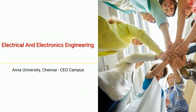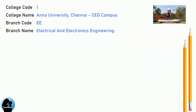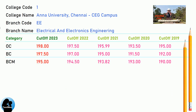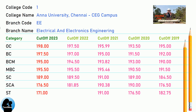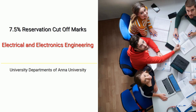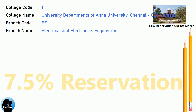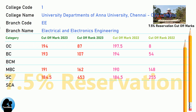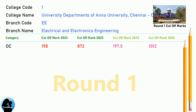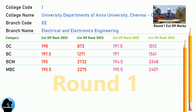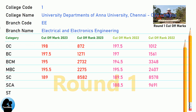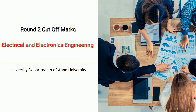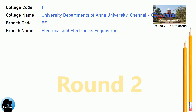DNA 9.5 Reservation Cut-Off for Anna University Chennai CEG Campus in Computer Science and Engineering. DNA 8.5 Reservation Cut-Off for Anna University Chennai CEG Campus in Electrical and Electronics Engineering. DNA 7.5 Reservation Cut-Off for Anna University Chennai CEG Campus in Electrical and Electronics Engineering. DNA Round 1 Cut-Off for Anna University Chennai CEG Campus in Electrical and Electronics Engineering. DNA Round 2 Cut-Off for Anna University Chennai CEG Campus in Electrical and Electronics Engineering.